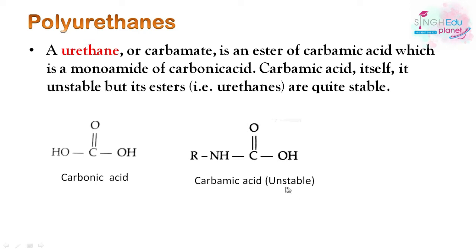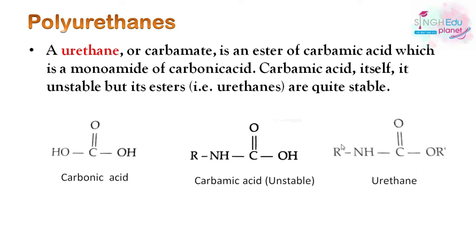Carbamic acid is unstable, but its ester — urethane — is quite stable. Urethanes are synthesized by the reaction between an alcohol and an isocyanate (R-NCO), producing the stable ester linkage called urethane.